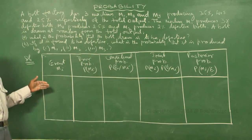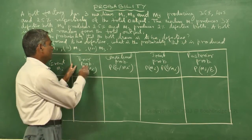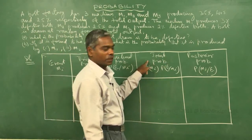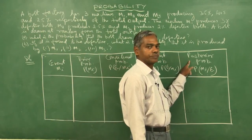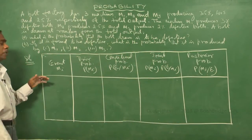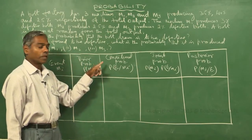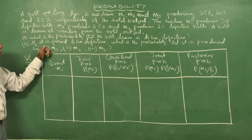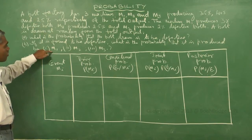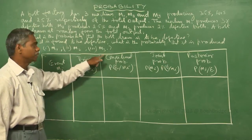The chart has columns for: event, prior probability, conditional probability, joint probability, and posterior probability. There are 3 machines — M1, M2, M3 — so we consider M1 as the event that the bolt is produced by machine M1, and similarly M2 and M3. Three events.